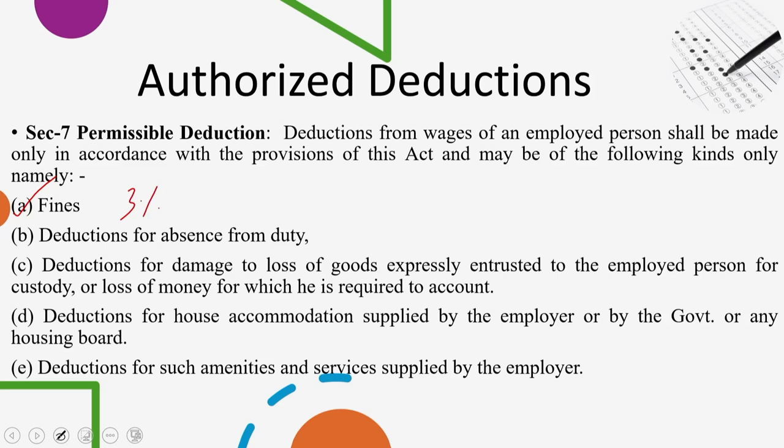No fine shall be imposed on any employed person who is under the age of 15 years. No fine shall be recovered from an employed person by instalments or after expiry of 60 days from the day on which it was imposed. Every fine shall be deemed to have been imposed on the day of the act or omission in respect of which it was imposed. This is what the act specifies with respect to fines.